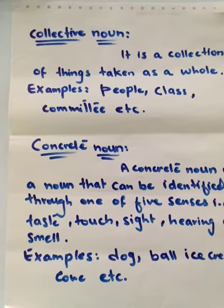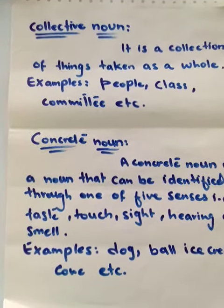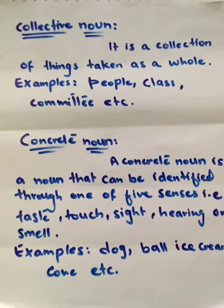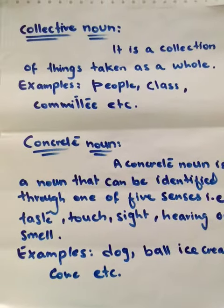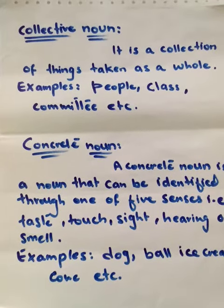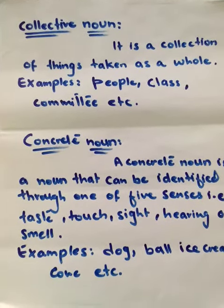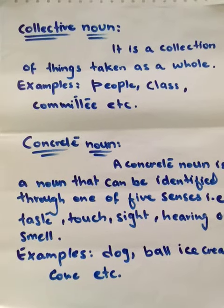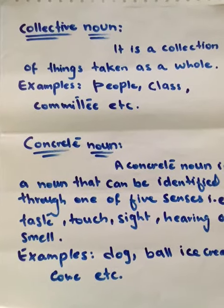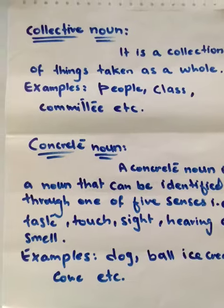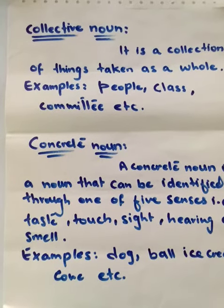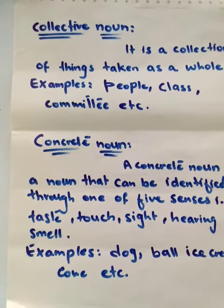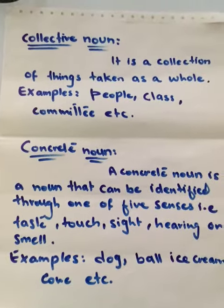Now children, I will explain the concrete noun. Objects and substances that can be experienced through our senses are referred to as a concrete noun. That means we can touch, feel, smell, taste or hear them. Examples of a concrete noun include flowers,